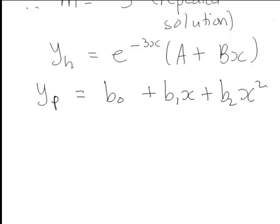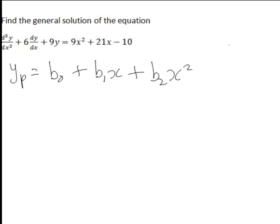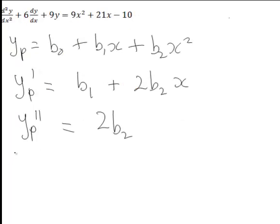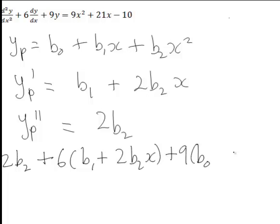We need to solve for the unknown constants b0, b1, and b2. The first derivative of yp is b1 plus 2b2x, and differentiating again the second derivative is 2b2. Because this is a particular solution of the DE, we substitute these derivatives back into the original DE: 2b2 plus 6 times (b1 plus 2b2x) plus 9 times (b0 plus b1x plus b2x squared).